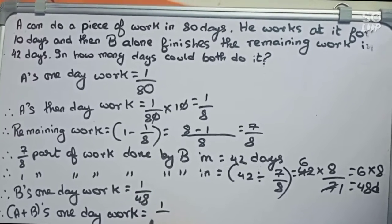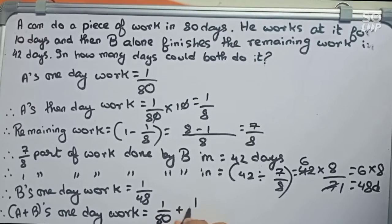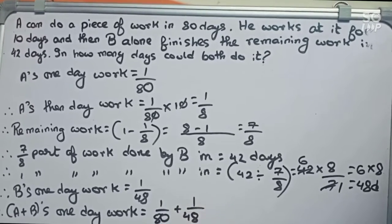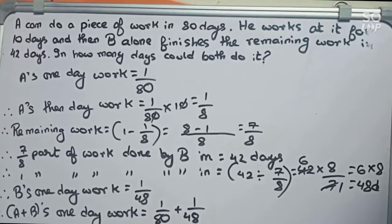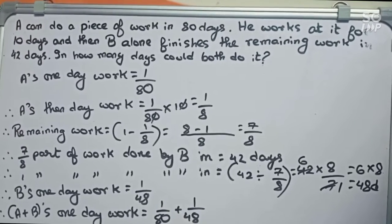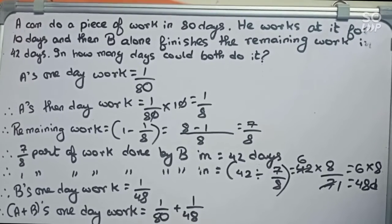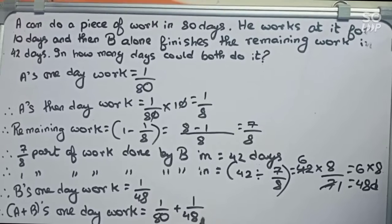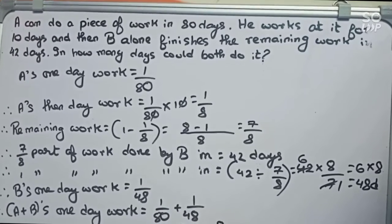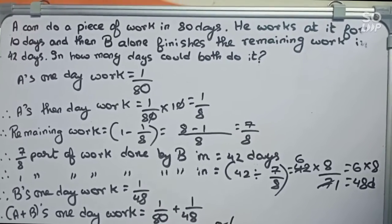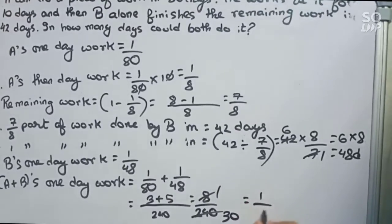1/80 + 1/48. This becomes (3+5)/240 = 8/240. Cut it, it will become 1/30. This is (A+B)'s one day work.